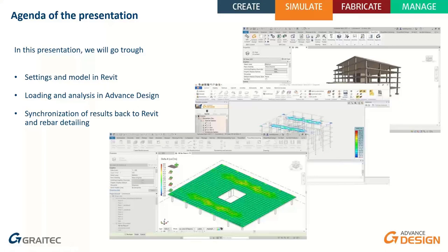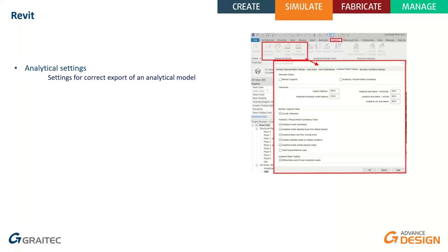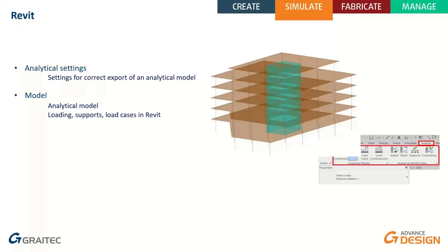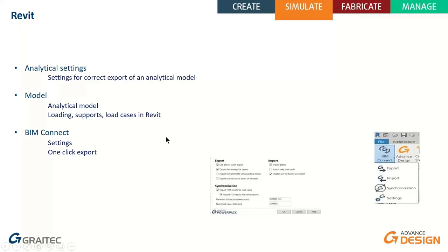So we're starting with Revit. First we'll check the analytical settings that are necessary for correct export of the analytical model. The second step is the model itself — we'll check the analytical model and the possibilities for loading, supports, and load cases in Revit. The last step will be using the add-on BIM Connect for direct export into our structural software.